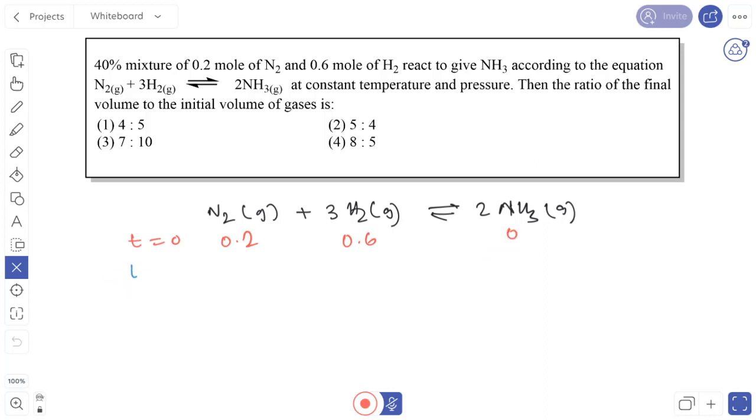At equilibrium, the advancement of reaction is xi. So nitrogen becomes 0.2 minus xi, hydrogen becomes 0.6 minus 3xi, and ammonia becomes 2xi. Total amount of moles that react is xi plus 3xi, that is 4xi. So 4xi equals 40% of the total.